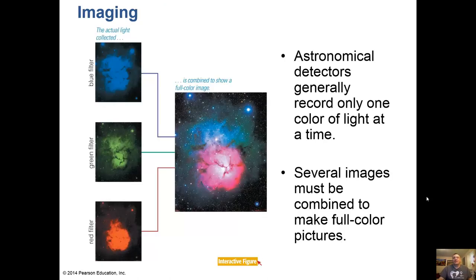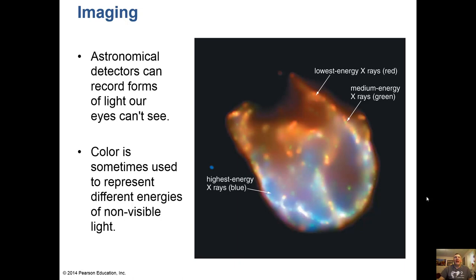Astronomical detectors generally record only one color of light at a time. We can put color filters in front of the detector to get several images, and these images must be combined to make a full color picture — you take red, green, and blue and combine them. Astronomical detectors can also record forms of light our eyes can't see, and color is sometimes used to represent different energies of non-visible light. In this image, red represents low-energy X-rays and blue represents high-energy X-rays.